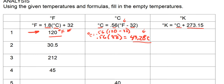Then we take our degrees Kelvin. Degrees Kelvin equals our degrees Centigrade, which is 49.28, plus 273.15. We add those together and we get 322.43 Kelvin.